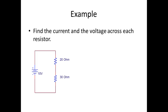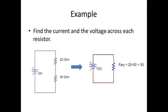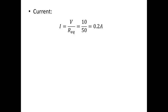Let's solve an example. We have a 10 volt source connected to two resistors in series: 20 ohm and 30 ohm. We compute the current by first finding the equivalent resistance — 20 ohms plus 30 ohms gives us 50 ohms. Now with one source and one resistor, we apply Ohm's law: 10 volts divided by 50 ohms gives us 0.2 amps.